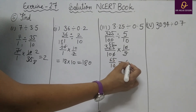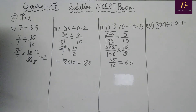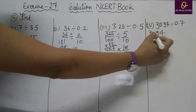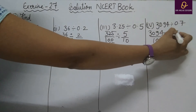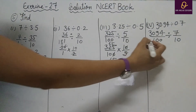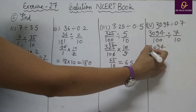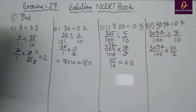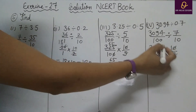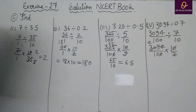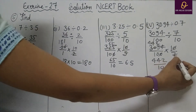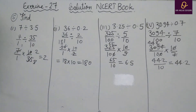Part D: 30.94 divided by 0.7. Remove decimal: 3094 divided by 100, and 7 becomes 7 by 10. Divide changes to multiply; reciprocal of 7 by 10 is 10 by 7. Cancel zeros: 0 with 0. Then 7 into 3094 — 7×4=28, 7×4=28, 7×2=14 — gives 442 divided by 10, which equals 44.2.